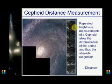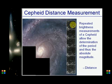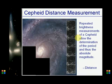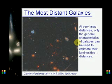In the Cepheid method, the variability of brightness increases with time. Using this, you can get the absolute magnitude, and by observation you can get the apparent magnitude. This way you can calculate the distance of a galaxy at very large distances.